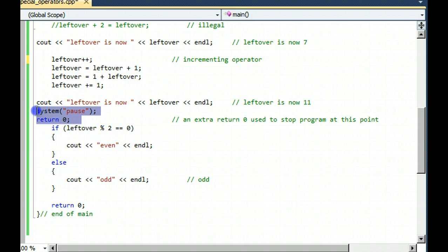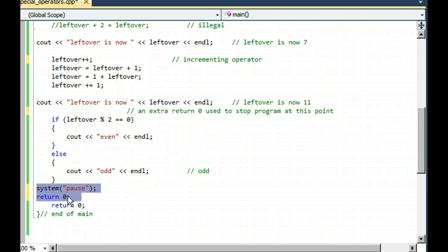Okay, continuing, let's all drag and drop our system pause return zero down here. And the last thing I'm squeezing in here is your first example of an if statement. We'll formally study this in a whole other unit. But to give you a preview, if the variable leftover is an even number, the program prints out even. Otherwise, it prints out the word odd.